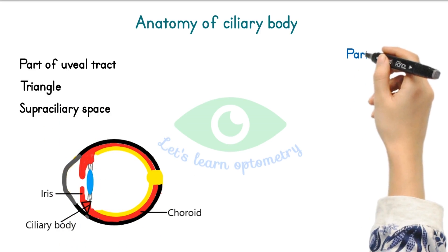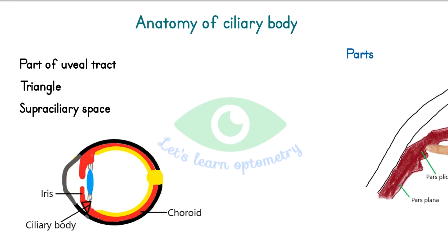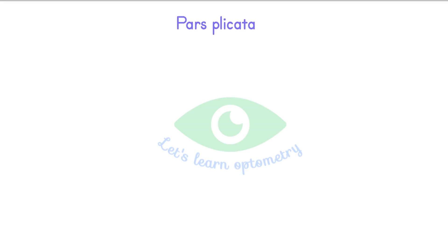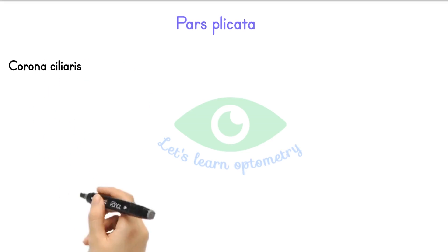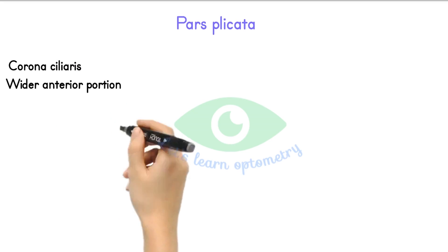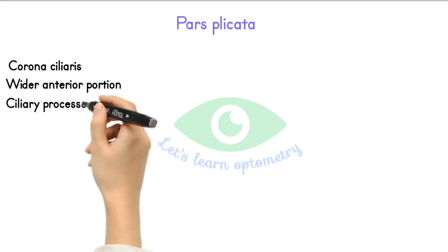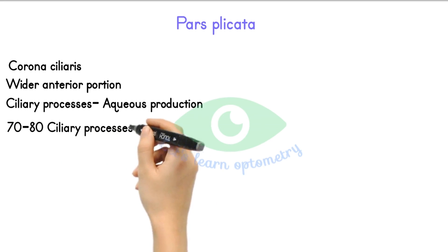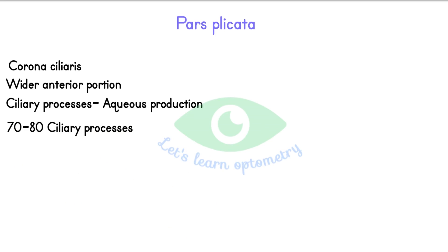Parts of the ciliary body. There are two main parts: the pars plana and the pars plicata. The pars plicata, otherwise called the corona ciliaris, is the wider anterior portion. It contains the ciliary processes, which are the actual site of aqueous humor production. There are approximately 70–80 ciliary processes which extend into the posterior chamber.